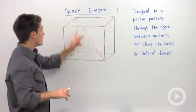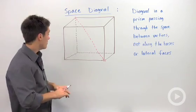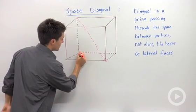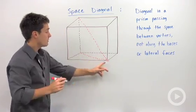So in order to calculate the length of this space diagonal, you're going to use the Pythagorean Theorem, and you're going to draw in a diagonal along the base of this face.